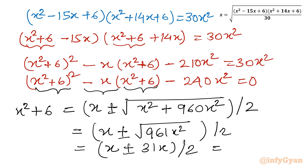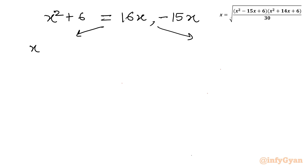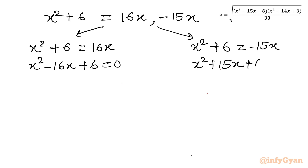With the plus sign: (x + 31x)/2 = 32x/2 = 16x. With the minus sign: (x − 31x)/2 = −30x/2 = −15x. So we get two values: x² + 6 = 16x and x² + 6 = −15x. Rearranging: equation 1 is x² − 16x + 6 = 0, and equation 2 is x² + 15x + 6 = 0.